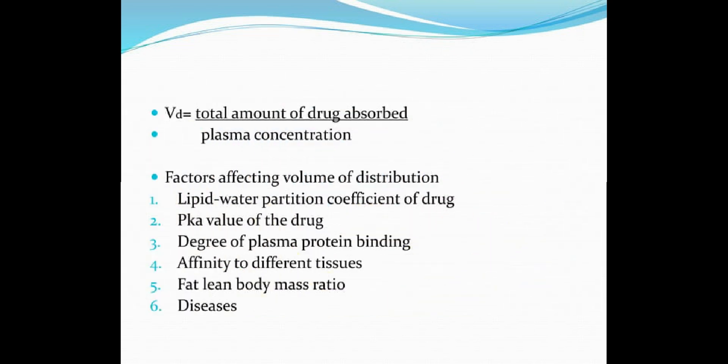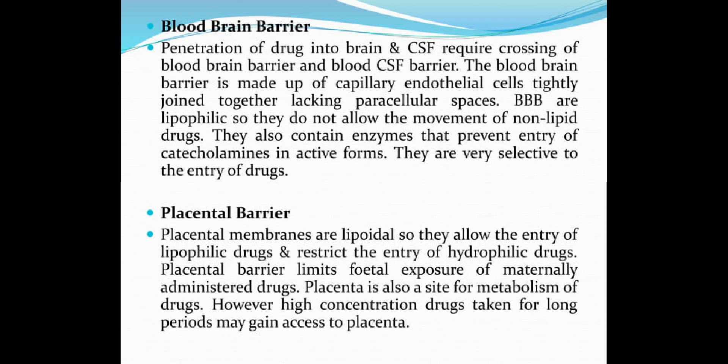Volume of distribution equals total amount of drug absorbed divided by plasma drug concentration. Factors that affect volume of distribution include: lipid-water partition coefficient of the drug, pKa value of the drug, degree of plasma protein binding, affinity to different tissues, fat-to-lean body mass ratio, and disease states. Now, the barriers of distribution — first, the blood-brain barrier (BBB).